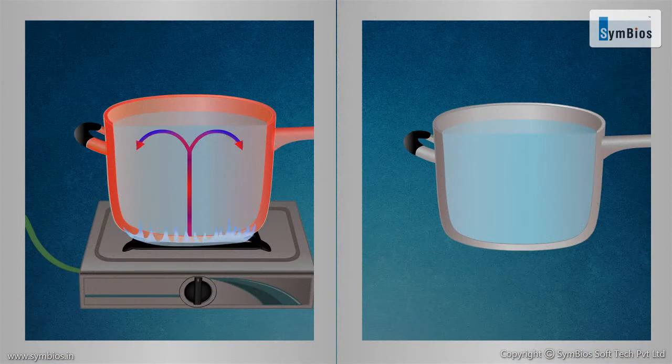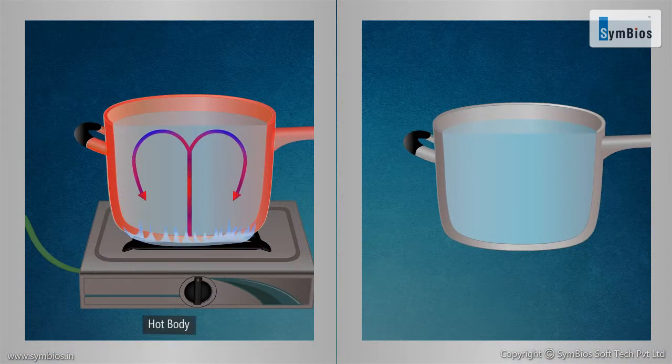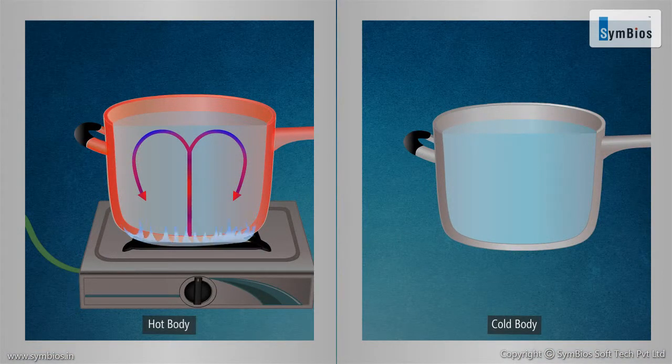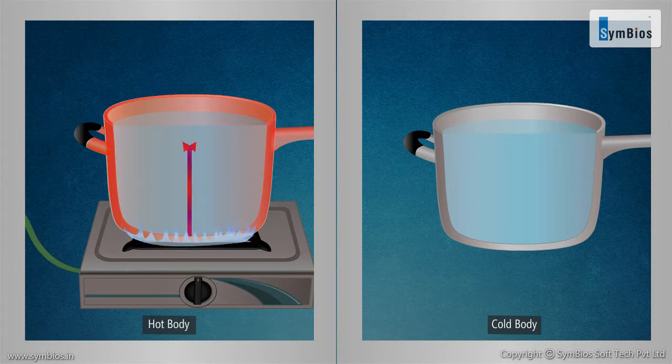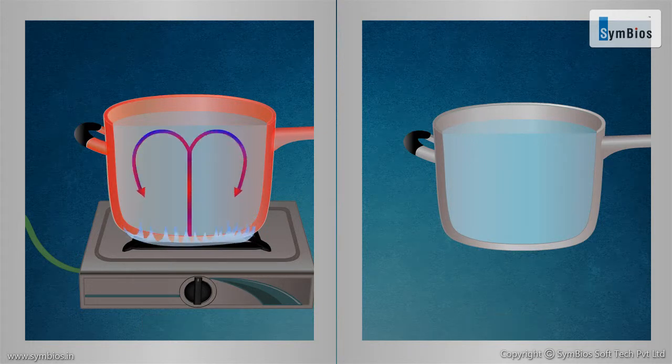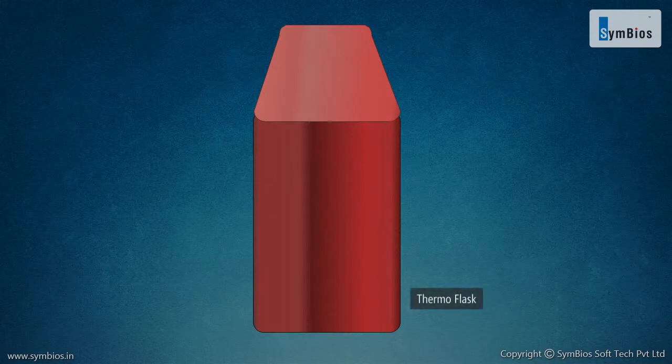So, to keep a hot body hot or cold body cold, we need to reduce the loss or gain of heat respectively. For example, a thermos flask is used to keep a liquid warm or cold for a long time.